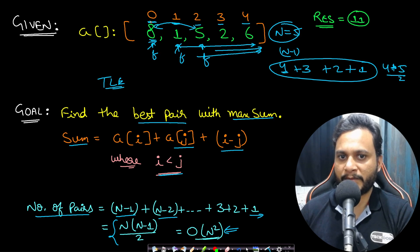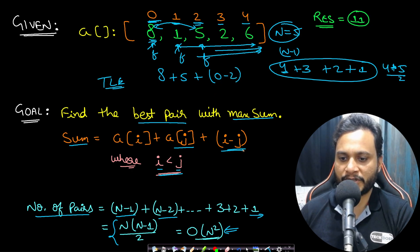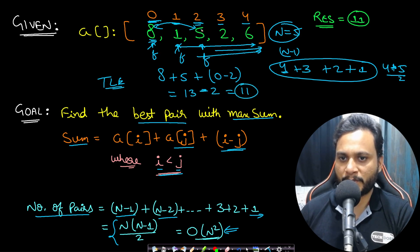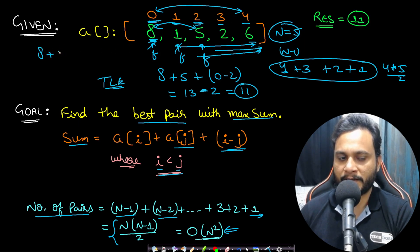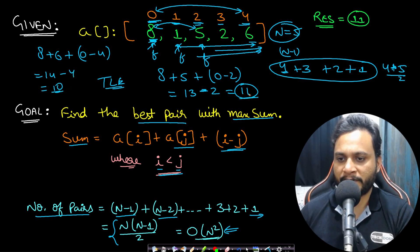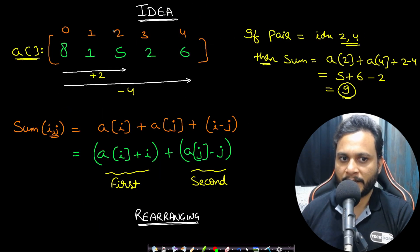If you did compare all pairs, you'd find the best pair is indices (0, 2) — values 8 and 5. The score is 8 + 5 + (0 - 2) = 13 - 2 = 11. Note that i - j is always negative since i < j. You can verify no other pair exceeds 11; for example, (0, 4) gives 8 + 6 - 4 = 10. So 11 is the answer.